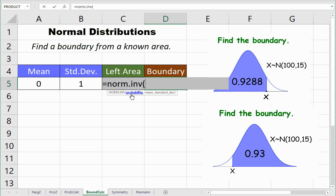We need to enter the probability, and this must be a probability to the left of the boundary you're looking for. That's why we have it specifically saying left area. I've stored my left area in C5. I could click on it if it wasn't covered up right now, but I'm just going to type it in: C5, the mean stored here, and the standard deviation stored here. Press enter.